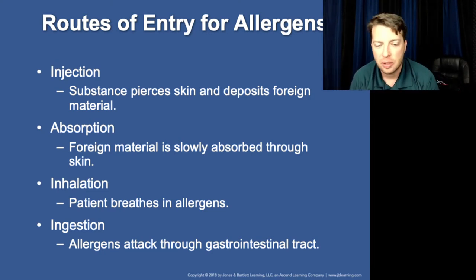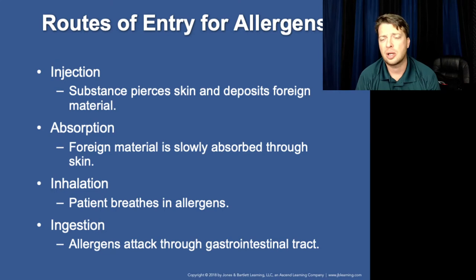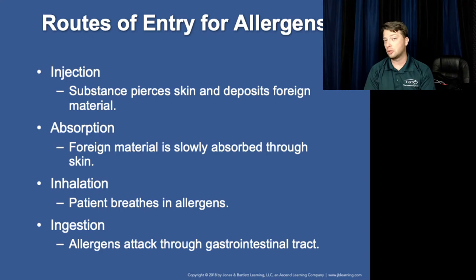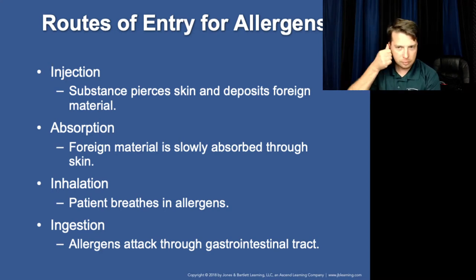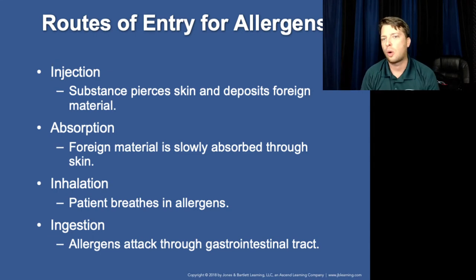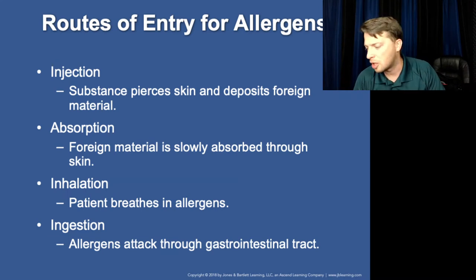The speed of onset will be affected by the route. Something injected or inhaled will tend to create a reaction faster than something ingested or absorbed. However, somebody with a severe food allergy — like peanuts — who gets it in their mouth will have the allergen absorbed through the mucous membranes very quickly, starting the reaction fast. It's also a matter of how much is required — something injected or inhaled may not require the same quantity as something absorbed on the skin.